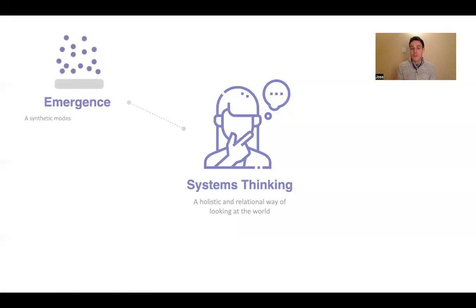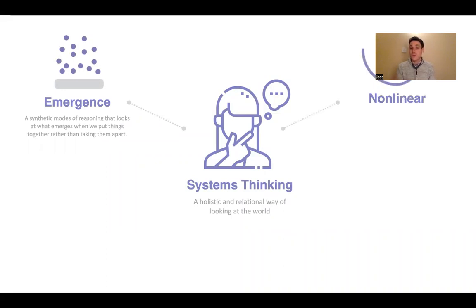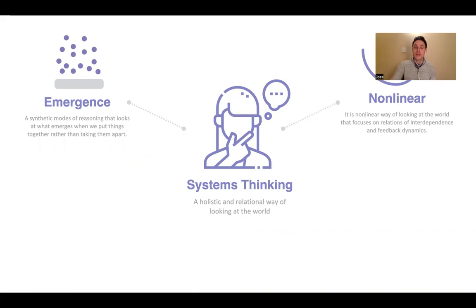We then jump into these four different dimensions. The first one is around emergence and synthetic thinking as key to systems thinking. The second one is around non-linearity, feedback loops, and relationships of interdependence.